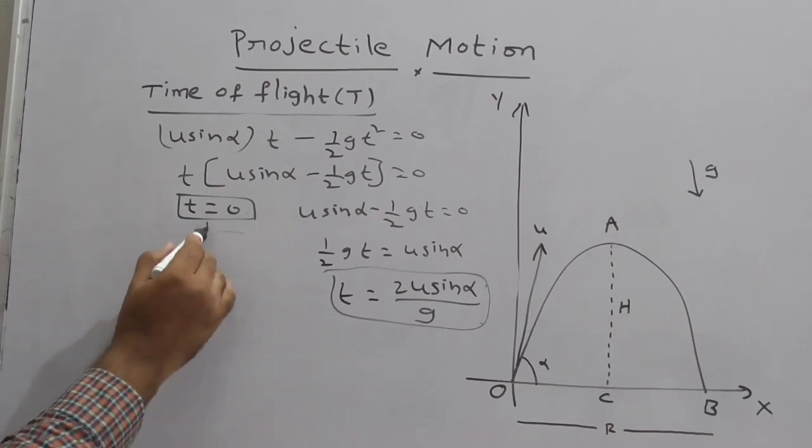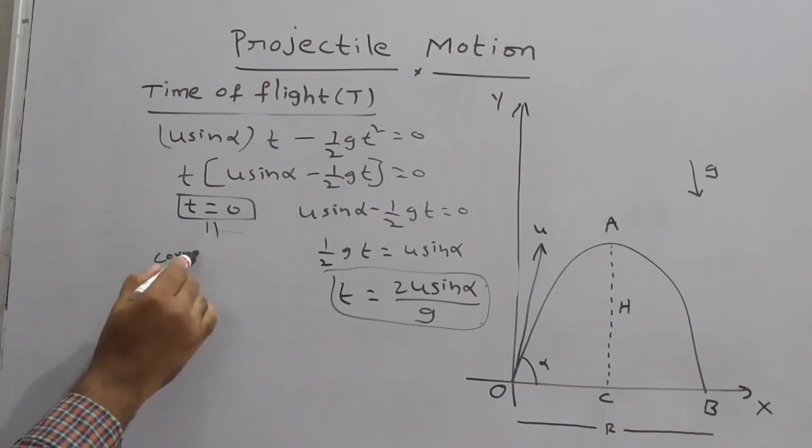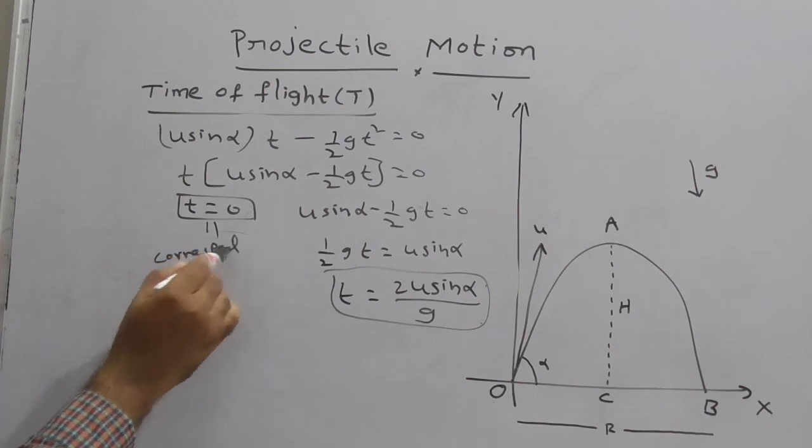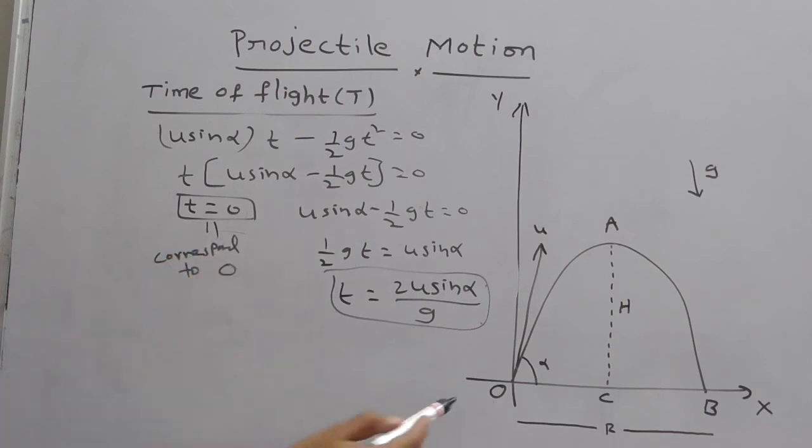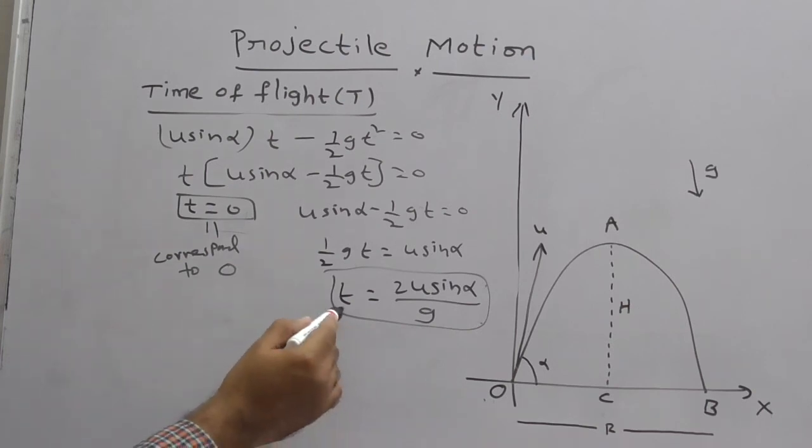So t equal to 0, this is corresponding to the initial point, corresponding to this O point. But we have to get what? Corresponding to the B point. That is t, time of flight, describing the path OAB. At B, we have to calculate. Therefore, so this is your formula.